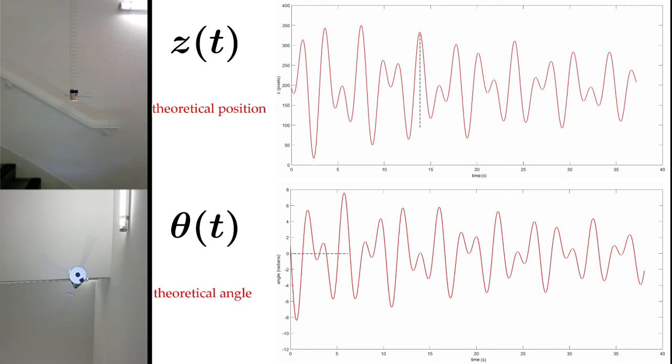We can really notice that when the amplitude of one of the curves is at its maximum, the other one is at its minimum, and vice versa.